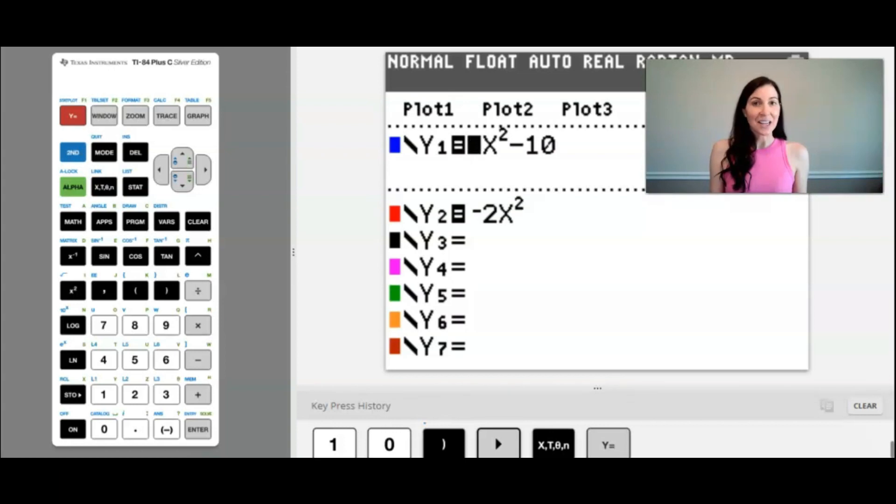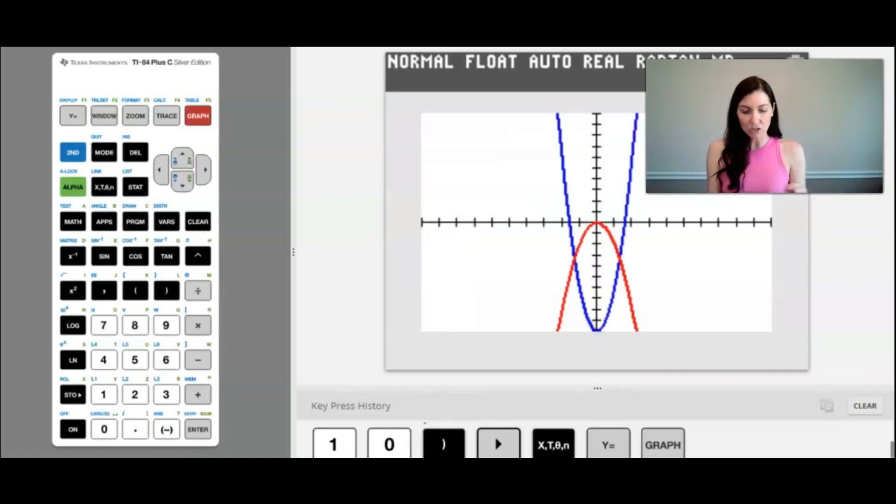And you can see that here the blue function will be the 4x² - 10 and the red function will be -2x². And there we have it, this graph and we want to find the area of that bounded region.